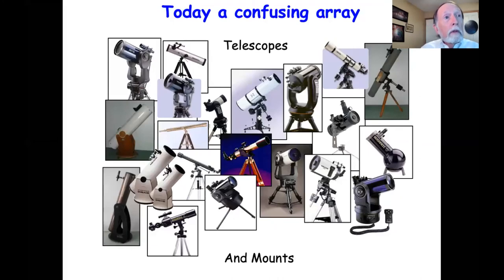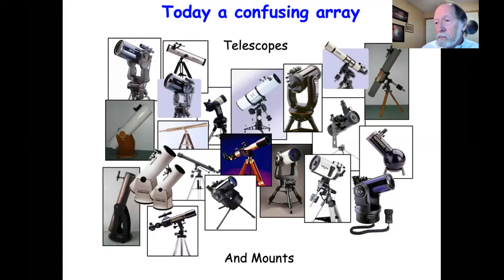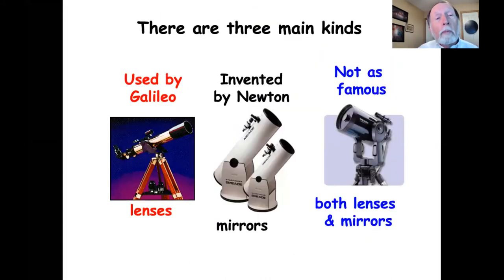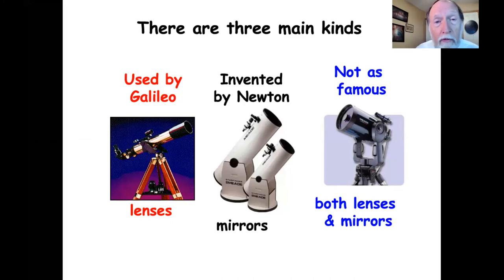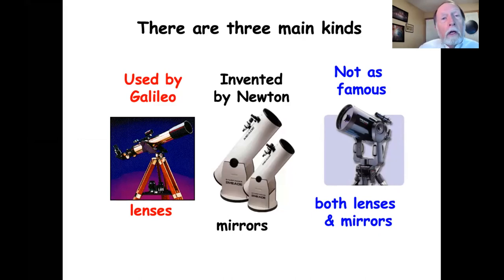Turning to the present, there is a bewildering collection of types of telescopes, equipment, and mounts, along with accessories that amateurs can make or purchase. For practical purposes, there are three main types of visual telescopes: one using lenses, called a refractor; one using mirrors, called a reflector; and one combining the two, called a catadioptric, or sometimes a Schmidt-Cassegrain telescope.